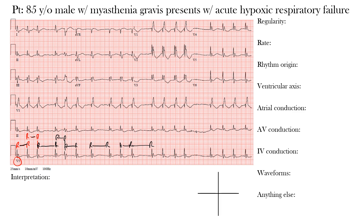Because there is no regularity to the R-to-R intervals whatsoever across the whole EKG, we call this an irregularly irregular rhythm.